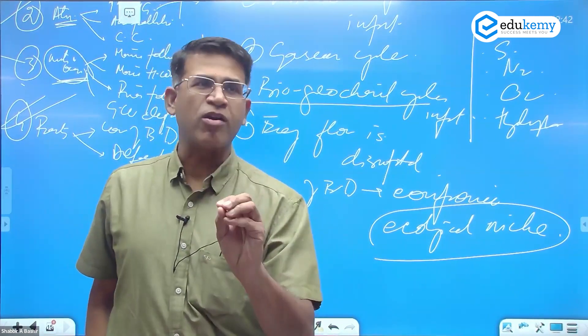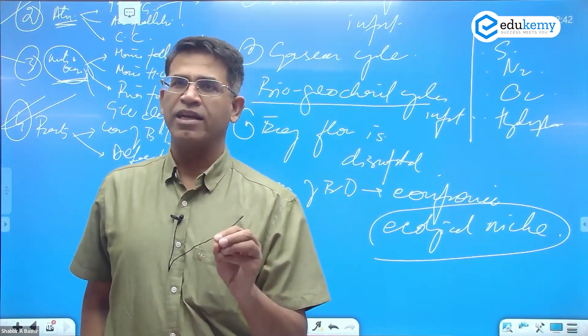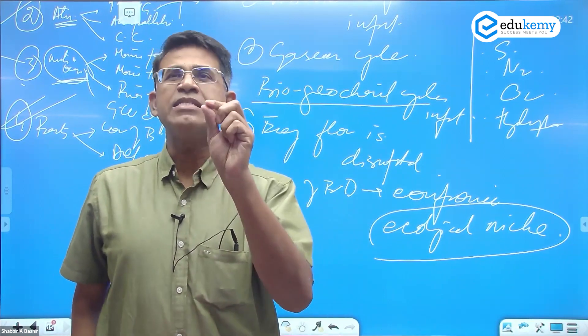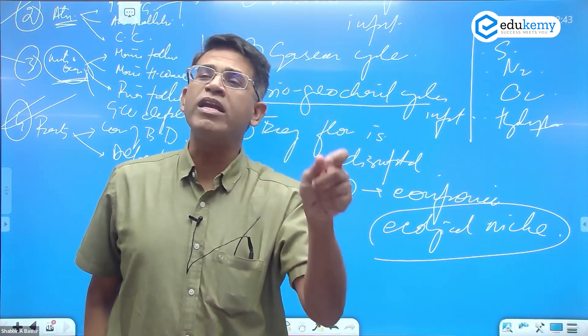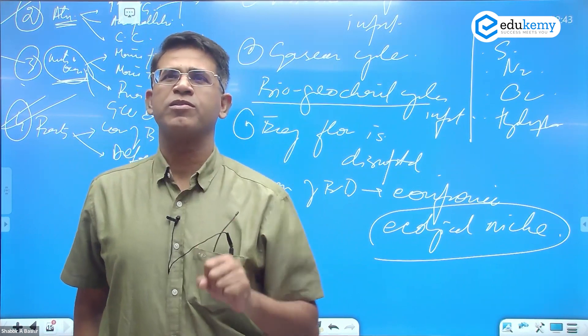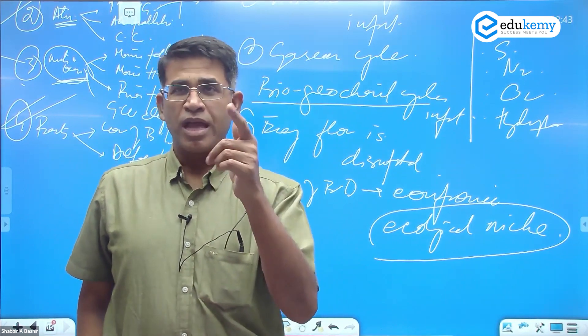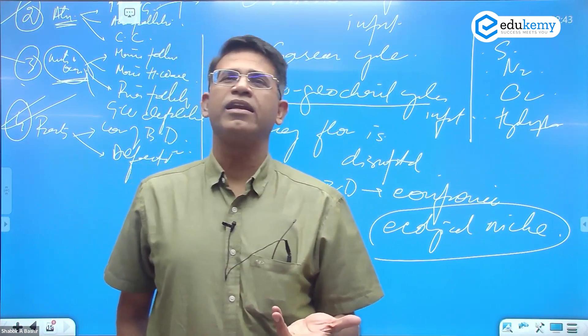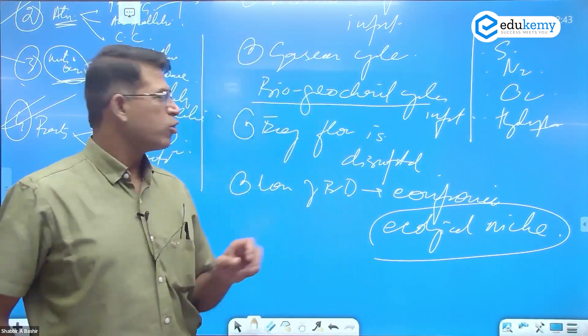Vultures have a position called scavenging and they eat up the dead remains. Bees have the role of pollination by virtue of the fact that they can fly and visit the flowers. Earthworms have a position in the soil and they make the soil more fertile. Every life form has some role.